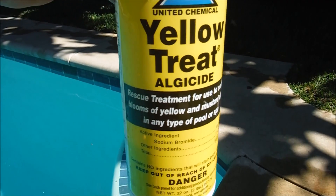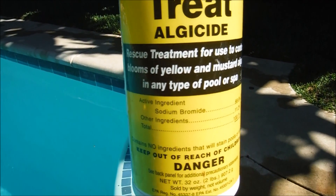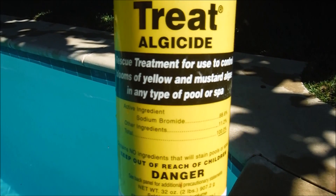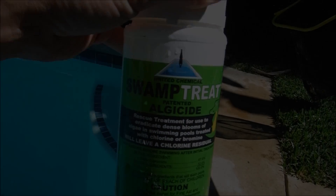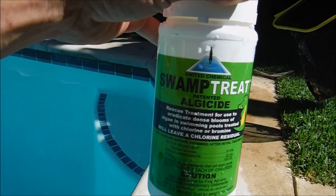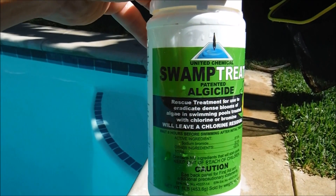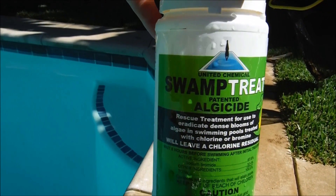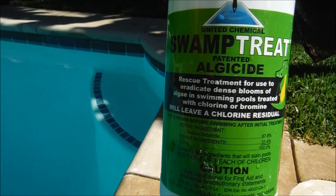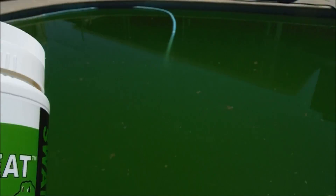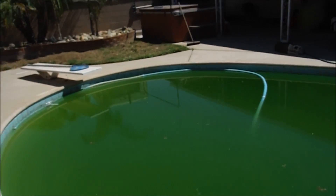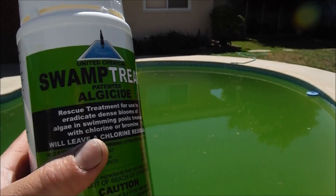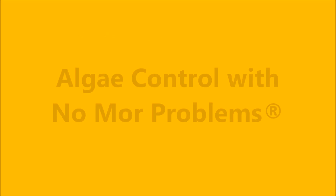Monitor the chlorine level closely during the week and make sure it stays above 3.0, adding more liquid chlorine if needed. If your pool has green algae or black algae, you want to use Swamp Treat to get rid of it. It's also a sodium bromide based formula, and it's been formulated to leave a residual chlorine level even though it's a sodium bromide product.